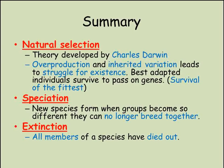Speciation is where a new species is created, as a group of individuals develops so many differences to the original group that they can no longer breed together. Extinction is where every member of a species dies before they are able to reproduce, so that no individuals of that species remain.